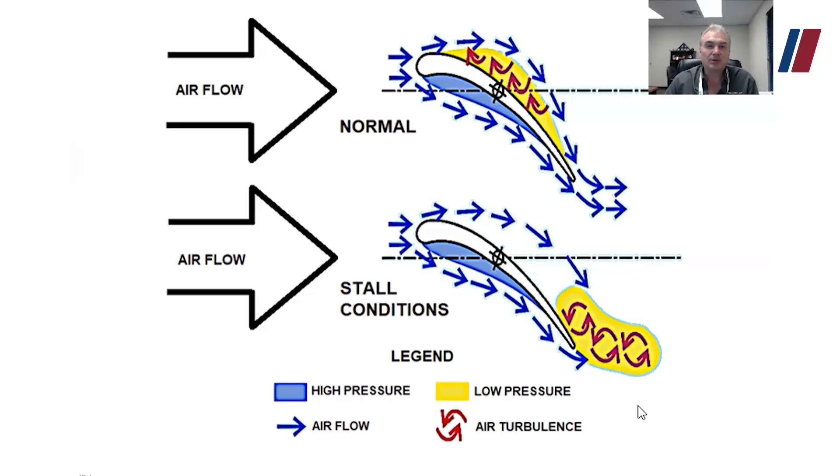A stall or surge mostly will happen in normal conditions during low speeds or startup. So at startup, you want the bleed air valves open or your variable stator veins open. As you come up on load, those things will close off and then allow normal airflow.